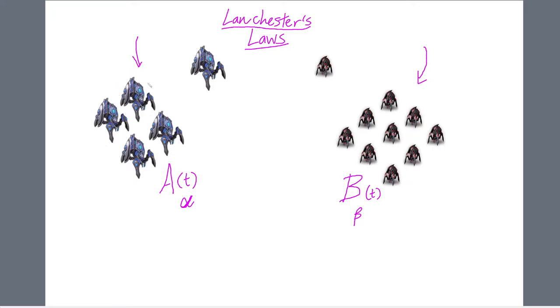If this person has a certain size of army and this person has a certain size of army, those are the values A(t) and B(t). They're properties of the army that change over time. But these coefficients alpha and beta, or the power of the units within each of these armies, represented the number of opposing units per unit time that an individual member of a particular army could destroy. So this coefficient alpha is a property of the type of unit involved.